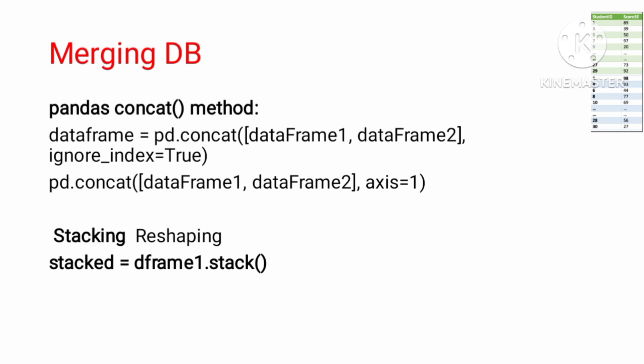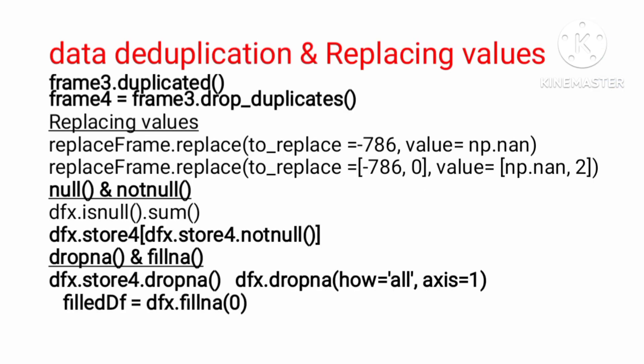Python has a wide range of packages for data transformation. These include Pandas, Seaborn, and Matplotlib packages. For merging, you can use stack and unstack operations. For data deduplication: if the same data is repeated, you identify and remove duplicates. Methods used include the duplicated method, null method, and not-null method.